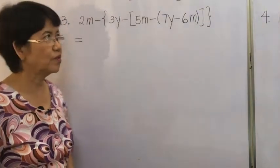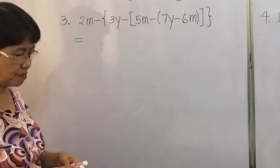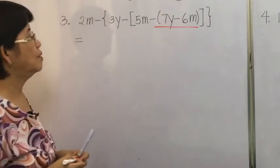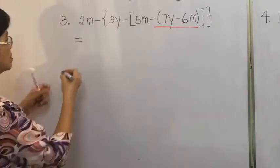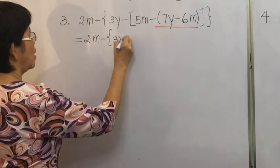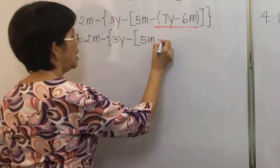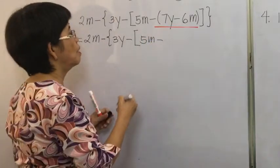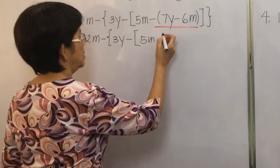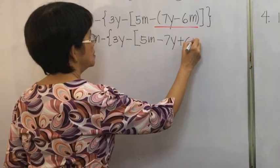For example 3, we have three grouping symbols. We will remove the innermost grouping symbol first. We copy the rest: 2M minus 3Y minus 5M, and then multiply everything inside by negative 1 and remove the grouping symbol, giving negative 7Y plus 6M.